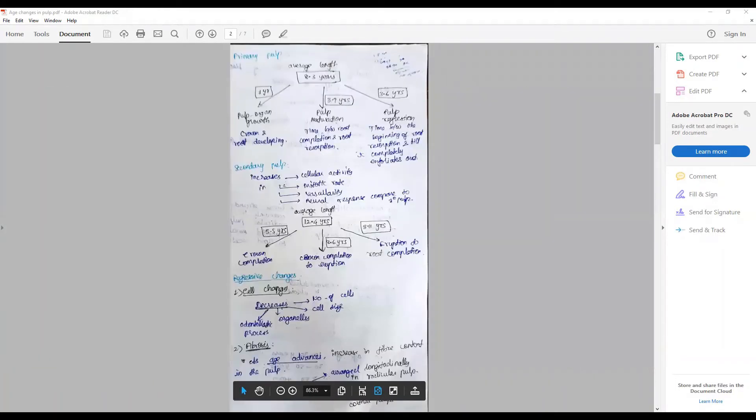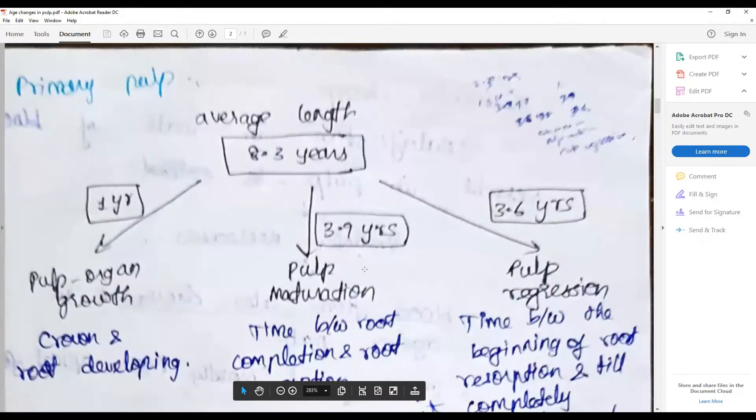The average length of a primary pulp happens to be about 8.3 years, of which the first year is concerned with pulp organ growth, wherein the crown and root developing happens.